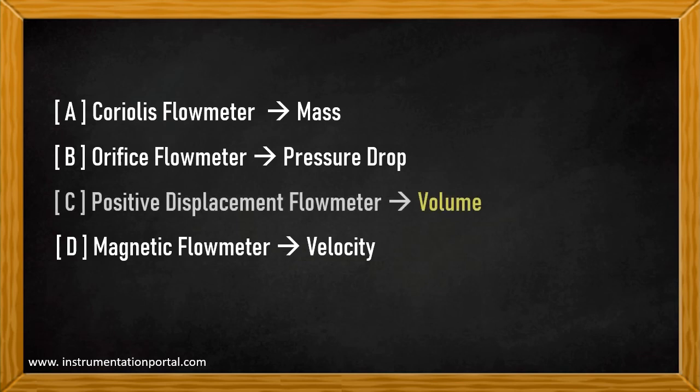A positive displacement flow meter measures the flow by breaking it up into discrete elements or packages of fluid. Each package has a known volume. So the flow rate can be determined by counting how many discrete elements pass through the meter per unit time.